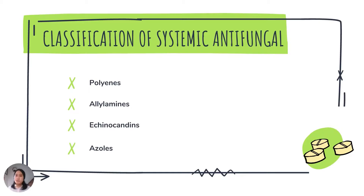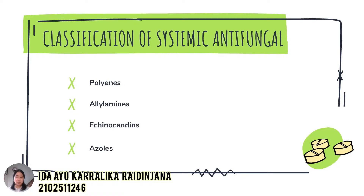My name is Sida Yuktralika Redingjana with the last digit number 246, and today I will explain the classification of systemic antifungals. Systemic antifungals are divided into four classes: polyenes, allylamines, echinocandins, and azoles. Polyenes induce physical changes in the membrane by binding to sterol components in the phospholipid-sterol membrane of fungal cells, and channels in the fungal cell membrane are formed by the long polyene structure.